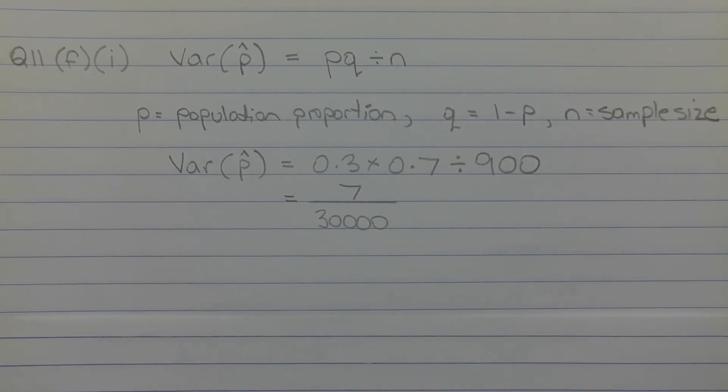So in this case, the population proportion is 30%, or 0.3. Q is 1 minus 0.3, which is 0.7, and N is 900. So the variance of P-hat equals 0.3 times 0.7 divided by 900. As a fraction, that's 7 over 30,000 as required.